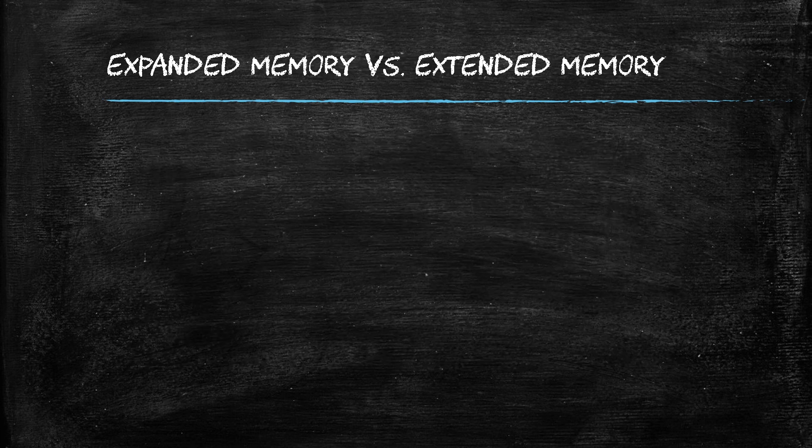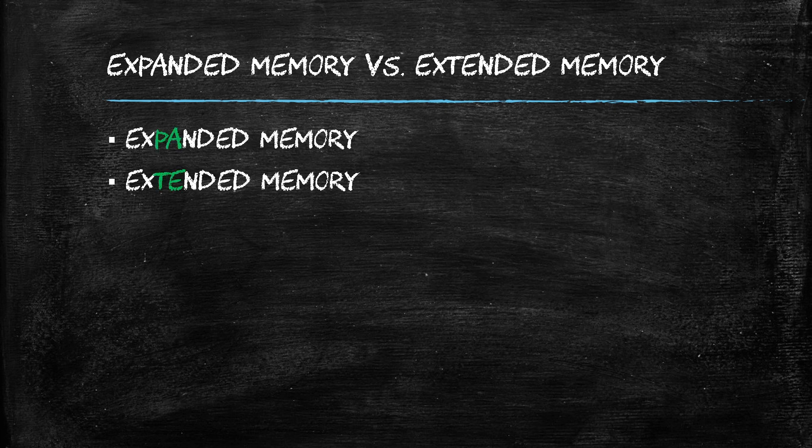It can get confusing when talking about expanded memory and extended memory because the words are very similar — only two letters are different. Thankfully, the abbreviations are a little easier to tell apart. Expanded memory is abbreviated as EMS, and extended memory is abbreviated as XMS.